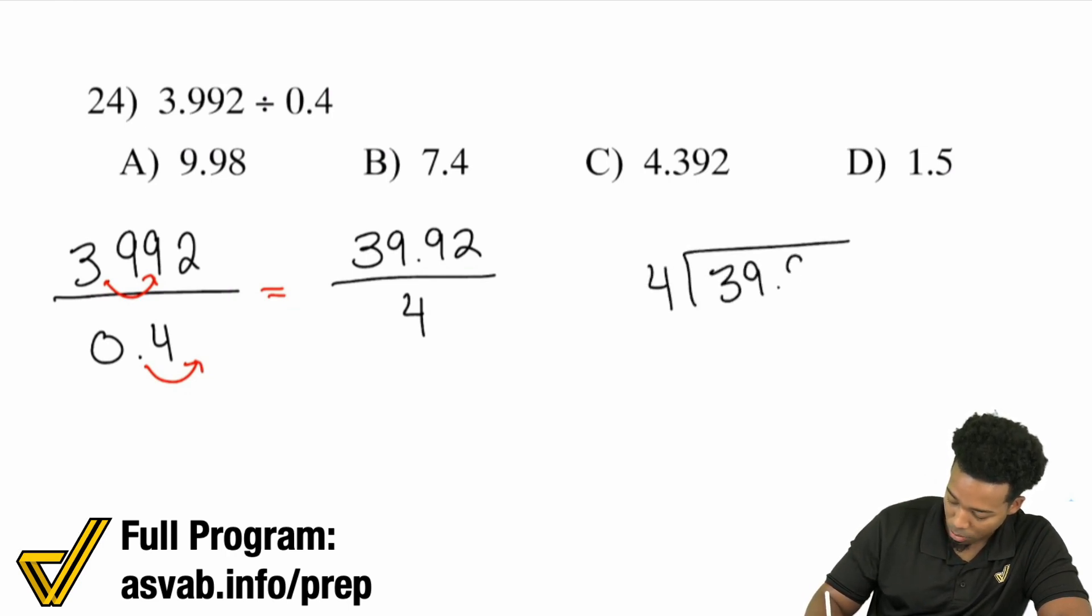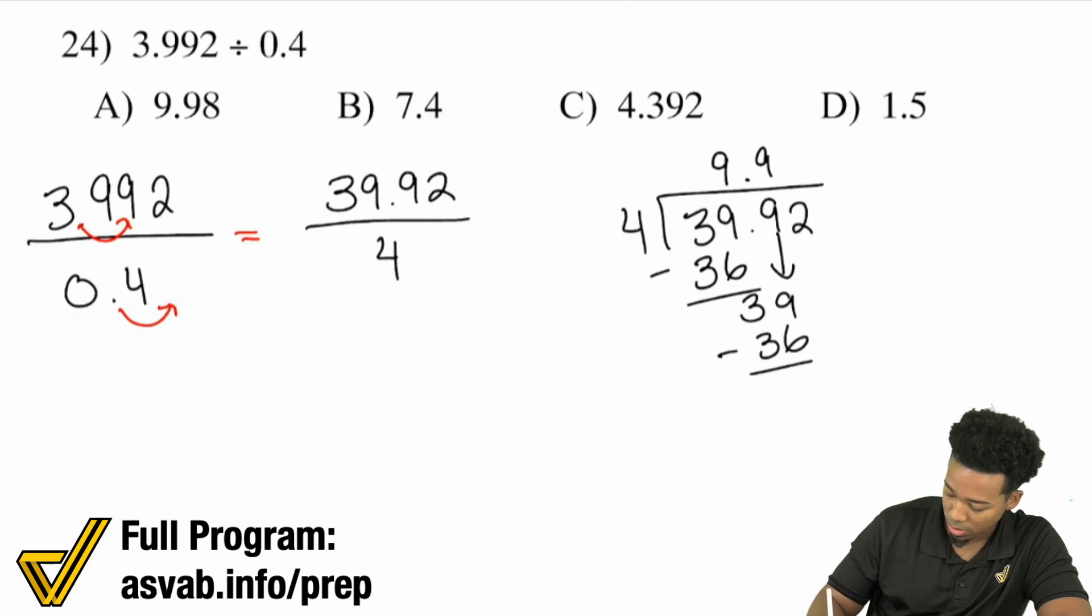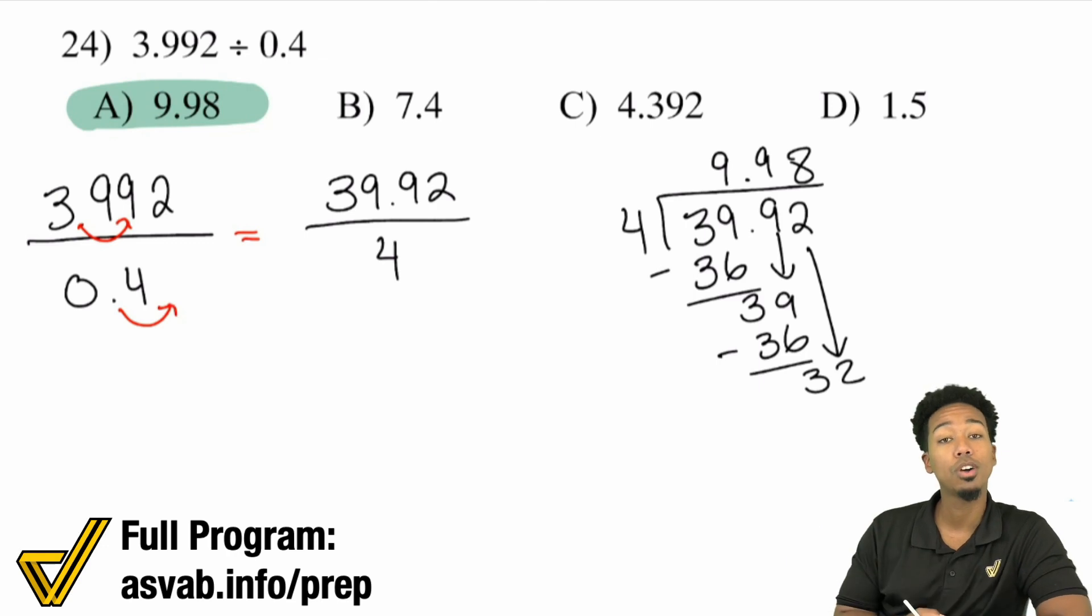39.92. 4 goes into 3, 0 times. 4 goes into 39, 9 times. Subtract 36 to get 3. 4 goes into 39, 9 times. Subtract the 36 again. Then bring down the 2. 4 goes into 32, 8 times. So you have 9.98, that's a clean 9.98, and you are done.